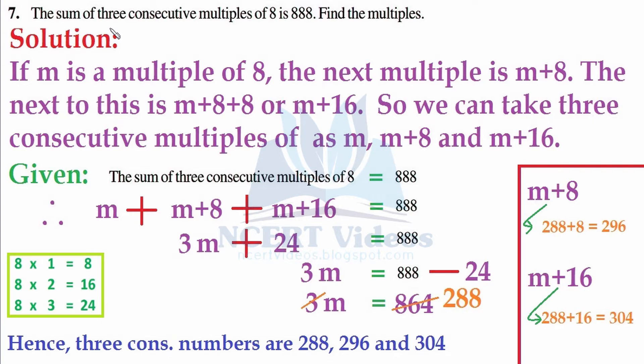The solution goes like this: if m is a multiple of 8, and we have chosen small m for the variable because the initial letter of multiple is small m and variables are always represented with small letters. The next multiple is m plus 8. We have described why it came m plus 8, because when you add 8 to it, it will give you the second multiple.